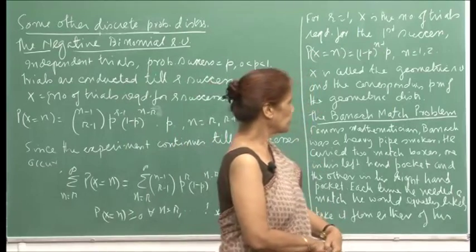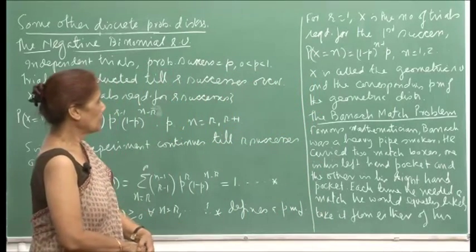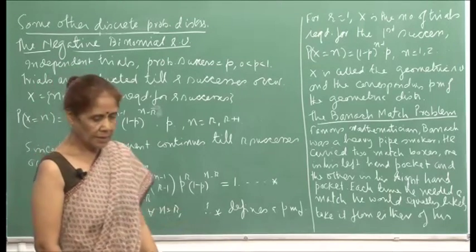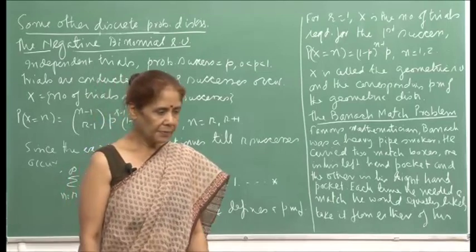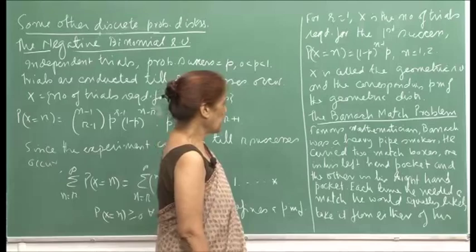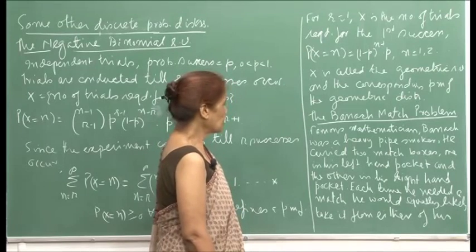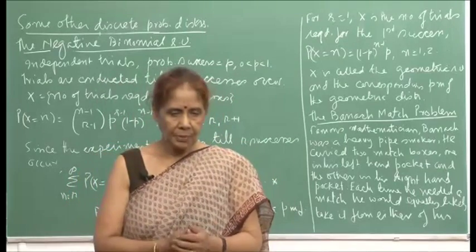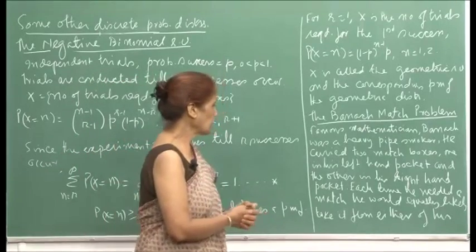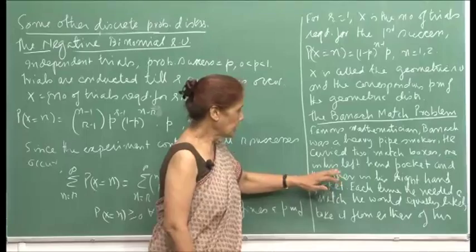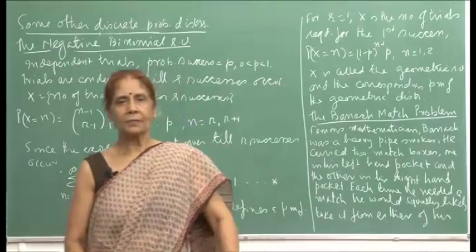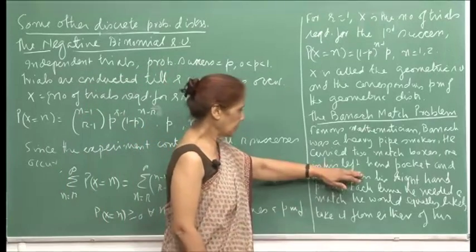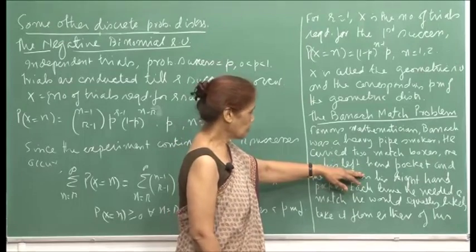Now, an interesting application of the negative binomial random variable and the distribution: this is known as the Banach match problem. Banach was a very famous mathematician and a heavy pipe smoker. So that he does not waste time looking for a matchbox, he would carry two matchboxes — one in his left hand pocket and the other in the right — so that wherever he puts his hand, he gets a matchbox and then lights his pipe.